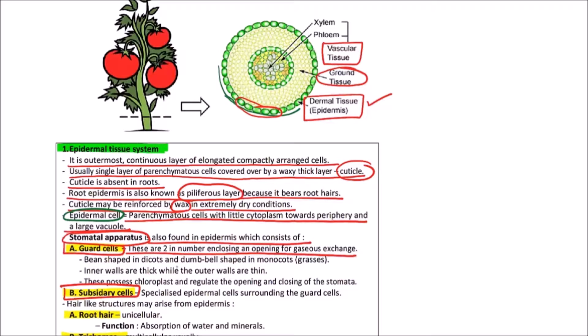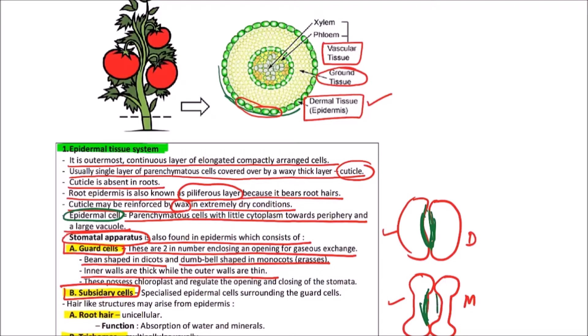We can observe that such guard cells are found in dicots and such type of guard cells are found in monocots. These are dumbbell shaped, these are bean shaped. Inner walls are thick while the outer walls are thin. The wall facing the stoma or the cavity are basically thicker in comparison to the outer wall.